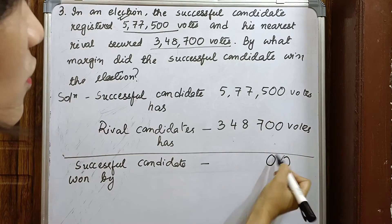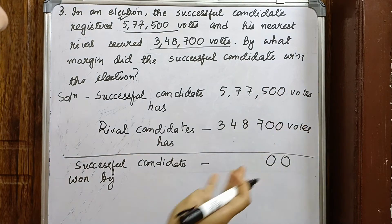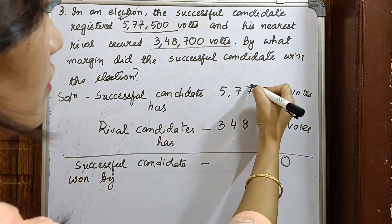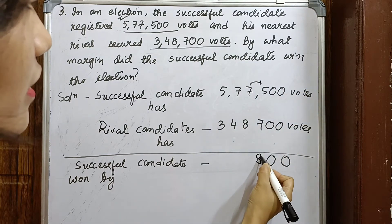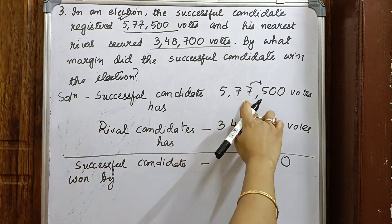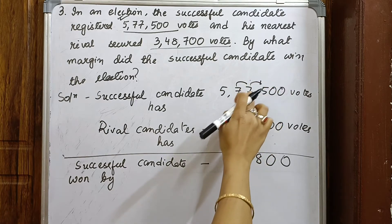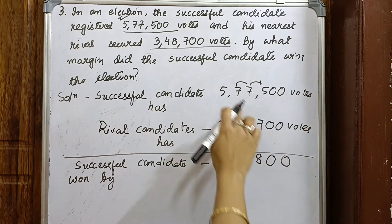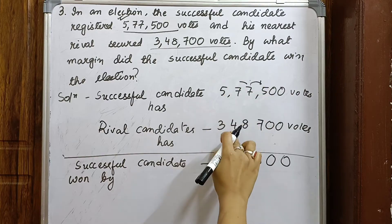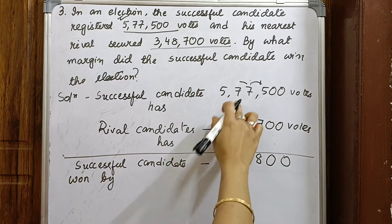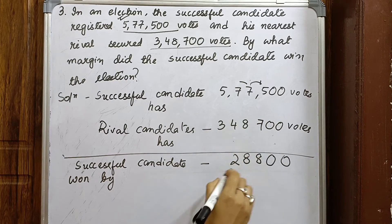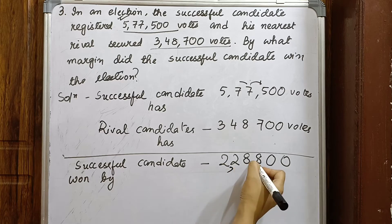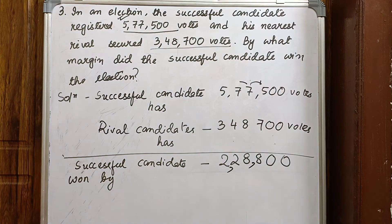Working through the subtraction: borrowing as needed across the digits — 15 minus 8, 16 minus 8 is 8, 6 minus 4 is 2, 5 minus 3 is 2 — giving us 2,28,800. The successful candidate won by 2,28,800 votes.